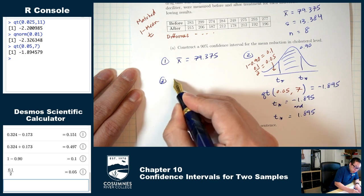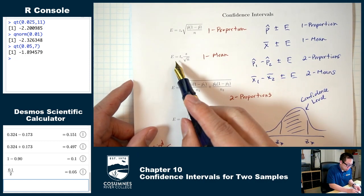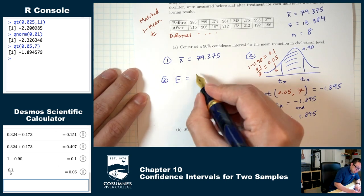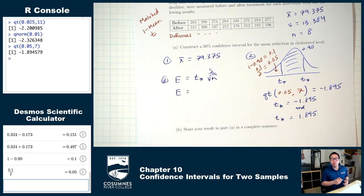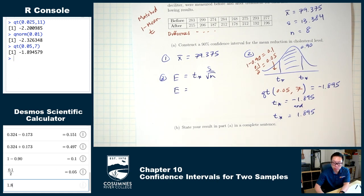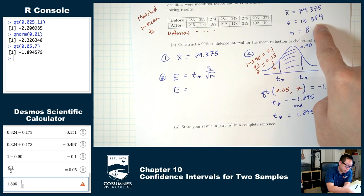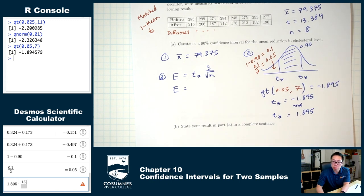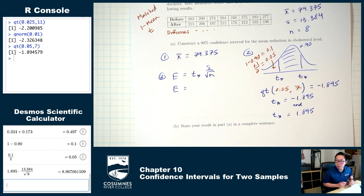Step three: find the margin of error. For one mean, the formula is t-star times s over square root of n. Using positive 1.895 times 13.384 divided by the square root of 8, the margin of error is 8.967.